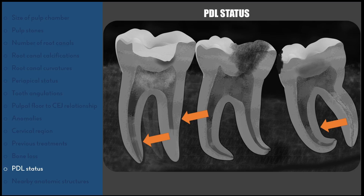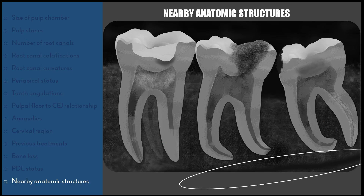Periodontal ligament space widening is also a finding when there is overload given to any specific tooth. Before initiating root canal treatment, we should also pay attention to nearby anatomic structures. For a mandibular tooth, we should always pay attention to the mental foramen and the inferior alveolar canal. For a maxillary tooth, we should always pay attention to the maxillary sinus. There are many case reports where pushing intracanal medicament like calcium hydroxide beyond the apex leads to paresthesia of the inferior alveolar nerve. So the inferior alveolar canal should also be taken into consideration while evaluating a radiograph before doing root canal treatment.